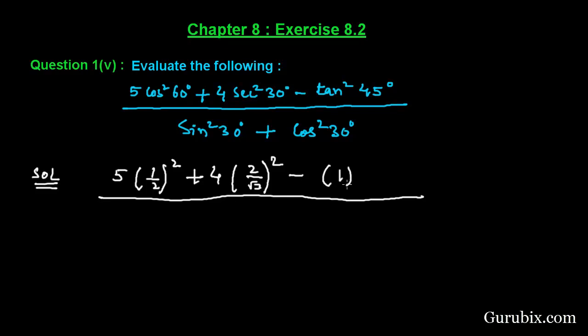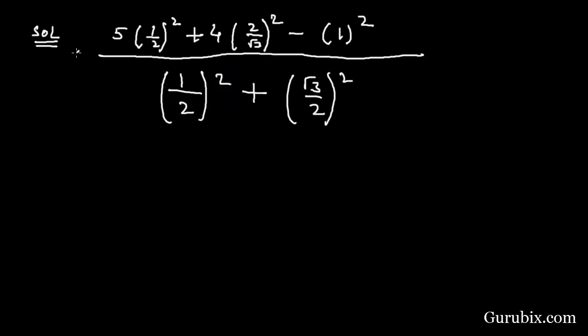sin 30 equals 1/2, so we shall find the square of 1/2. And here we have cos²30, then it will be (√3/2)². If we further solve this value, this equals to